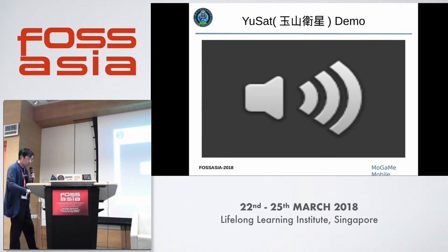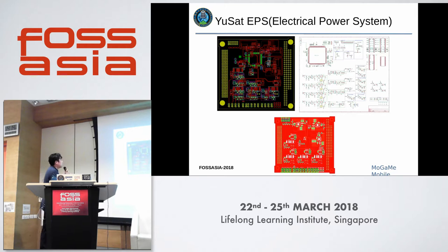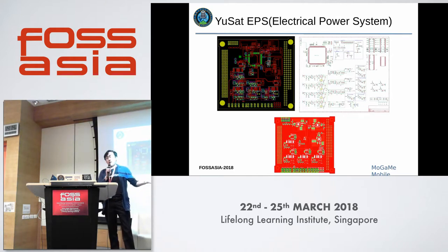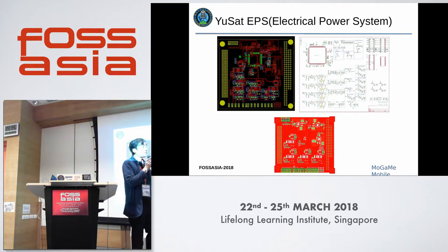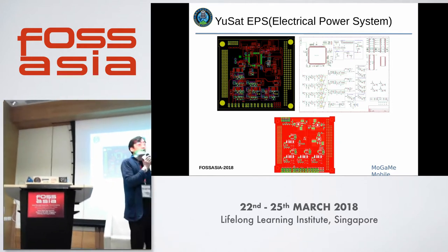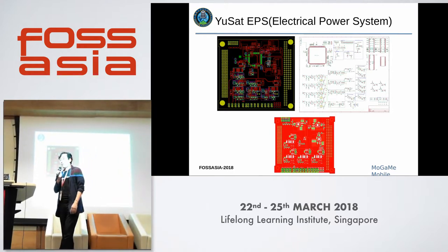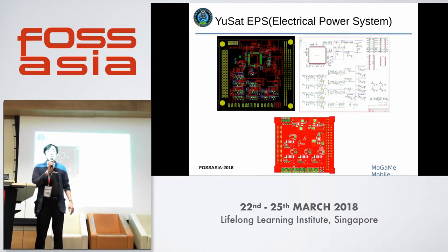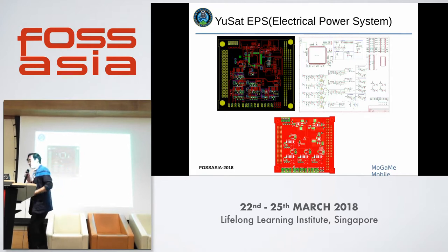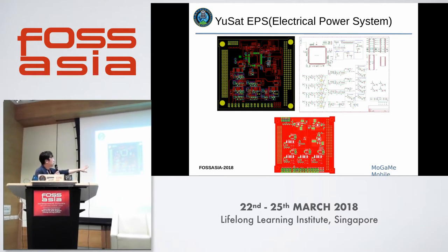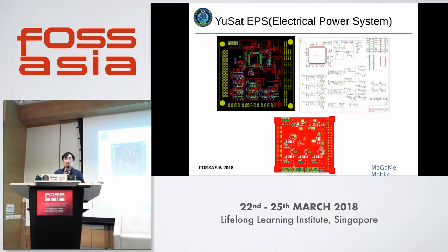I will show you the EPS system. Our CubeSat's name is YUSet because I come from Taiwan, and the highest mountain is called YUSet. The final launch date will be 2019. You can see our EPS - the power system for power from the solar cell - and we are doing energy harvesting.